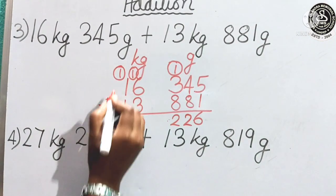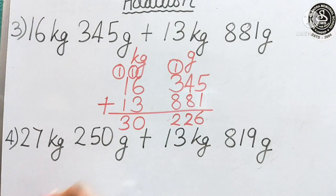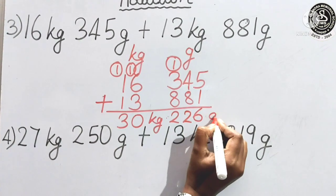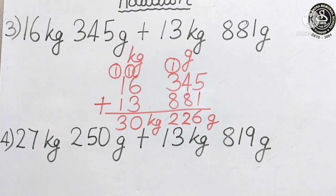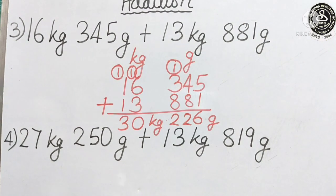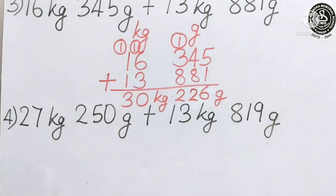Now, 1 plus 1. Carry 1. 3. That is 30 kg and 226 gram. Understood children? Let us see. One more example.